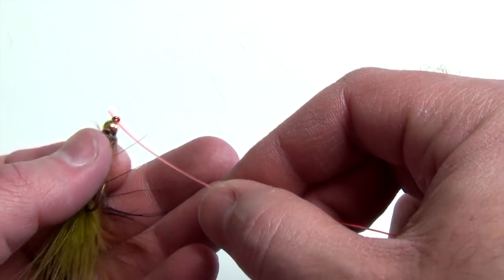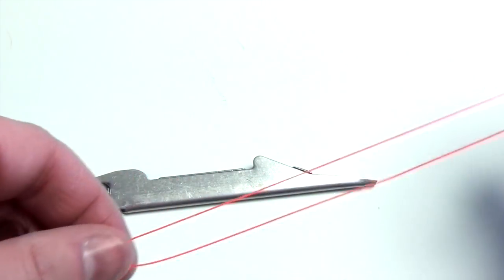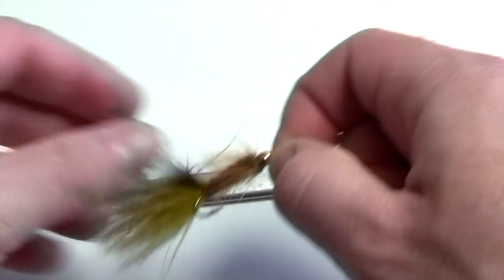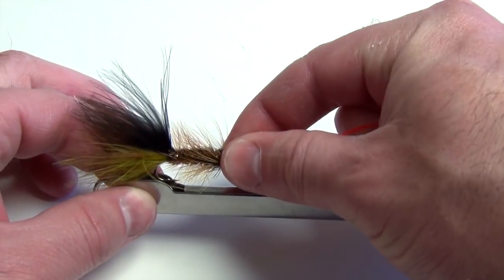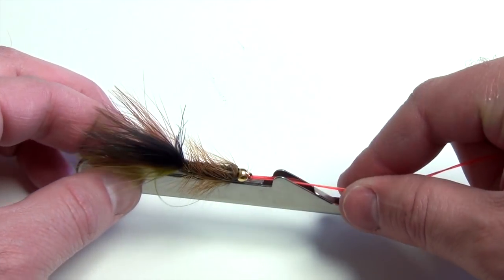The first thing you're going to do is thread the leader onto the fly. Then I'm going to hook the fly into the back half of the tool there. I'm just going to simply take the hook, drop it down into the slot, and hook it in.